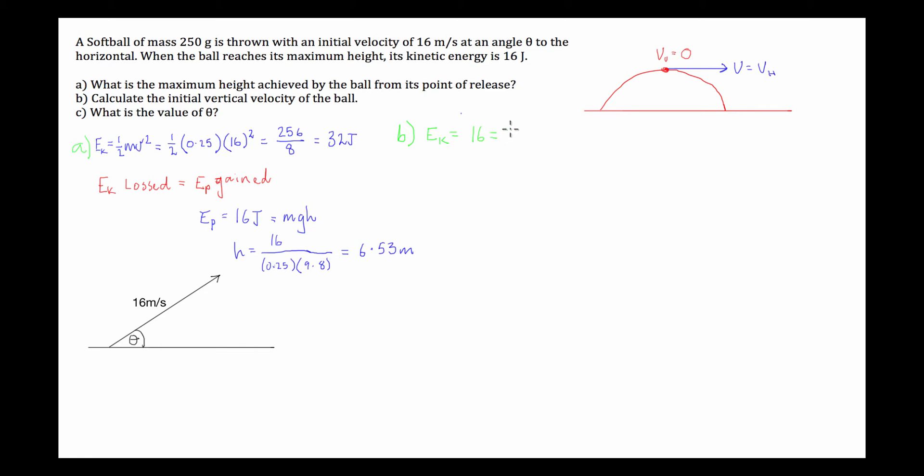And that's equal to the mass, 0.25 divided by 2, because it's half mv squared. Then we times that by v squared.